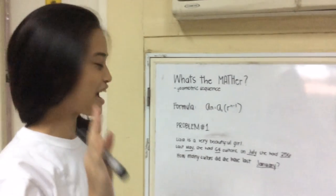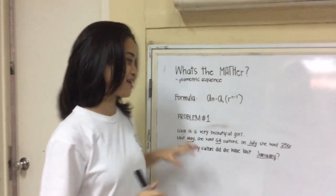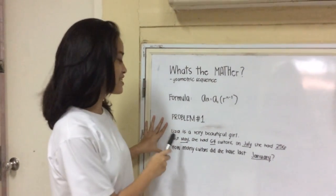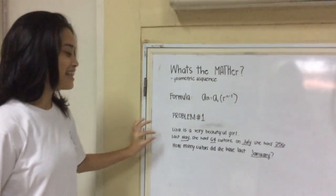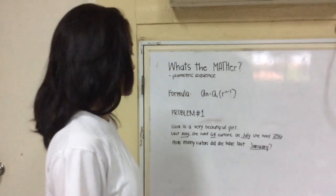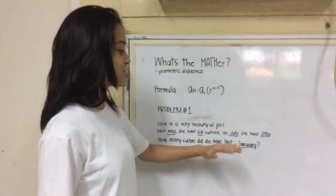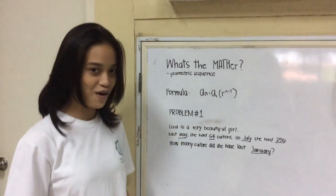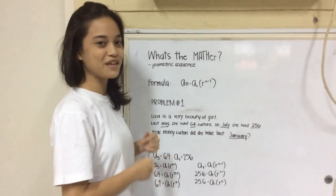Okay, so let's now find out if you got the answer. So, our problem is, Liza is a very beautiful girl. Last May, she had 64 suitors. On July, she had 256. How many suitors did she have last January? So, this is how we solve it.